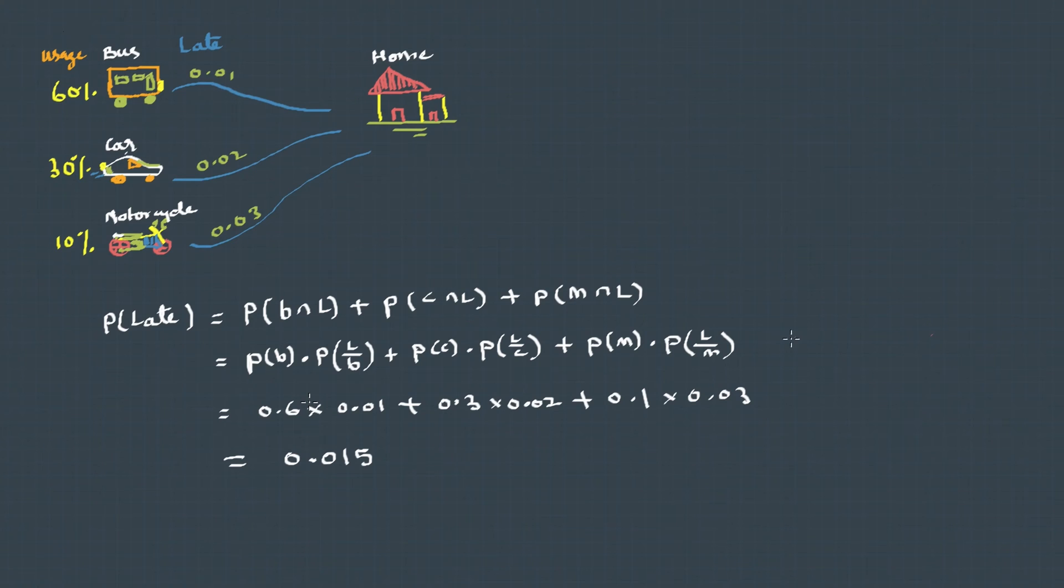All right, let's take one example. Here I have taken an example which we have discussed already in the last lecture on total probability, where the event was reaching home and we have three different mechanisms...